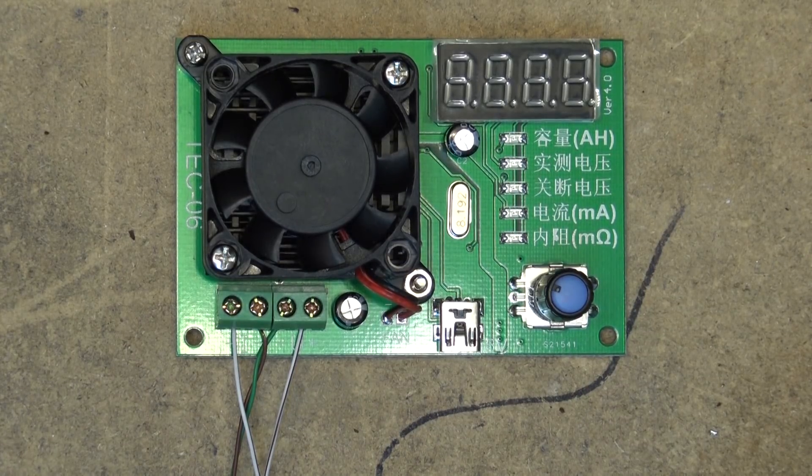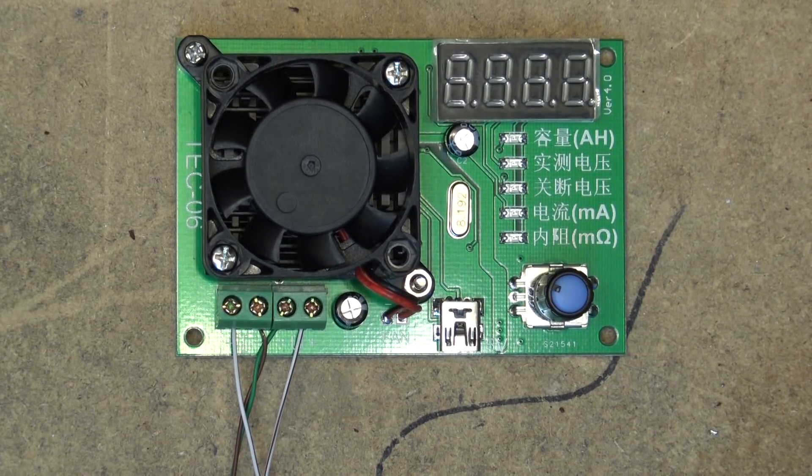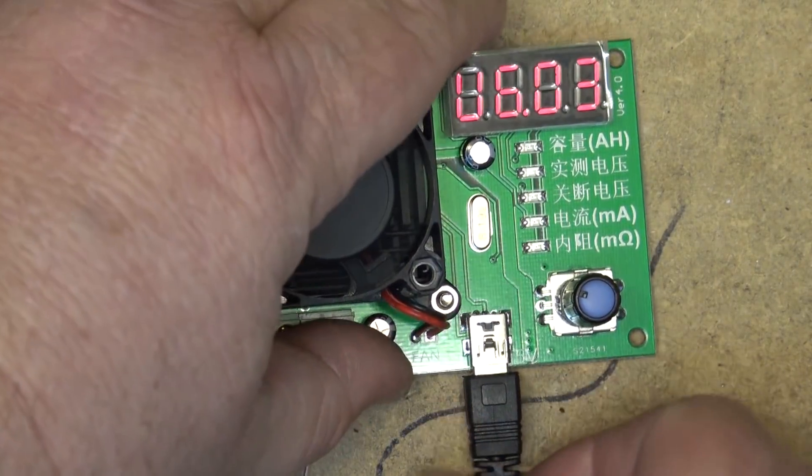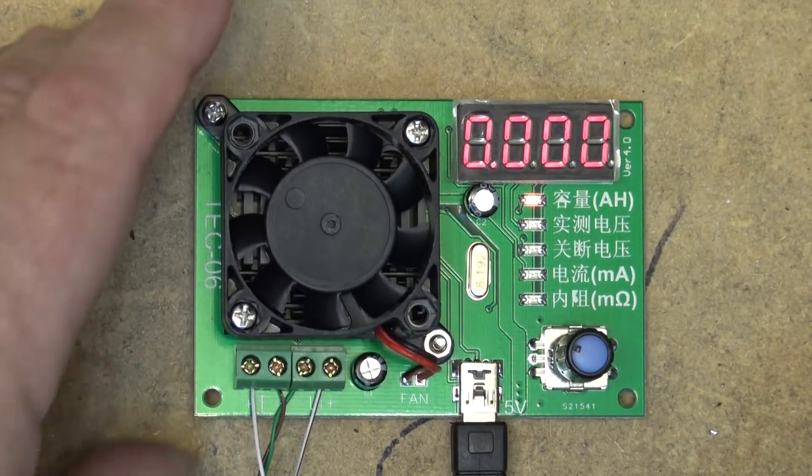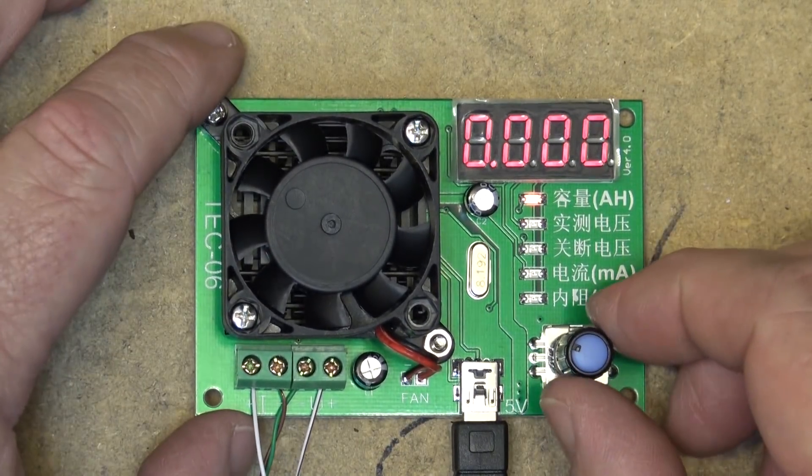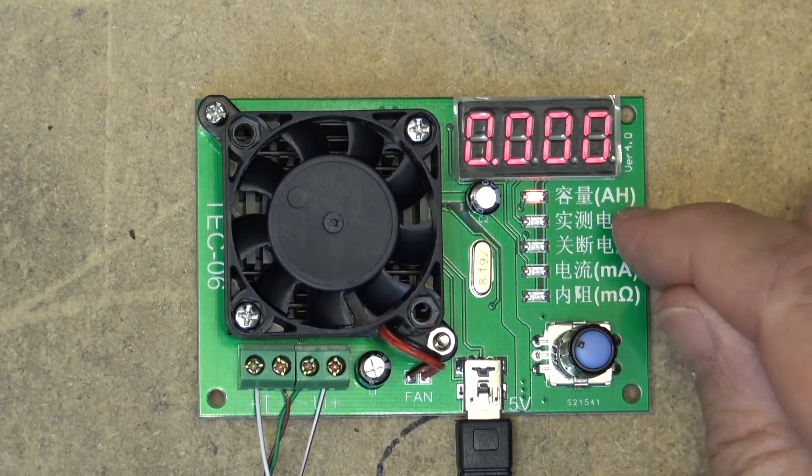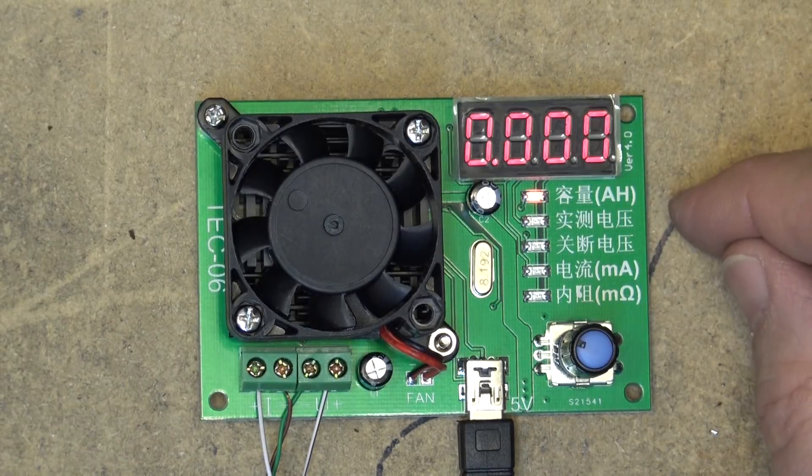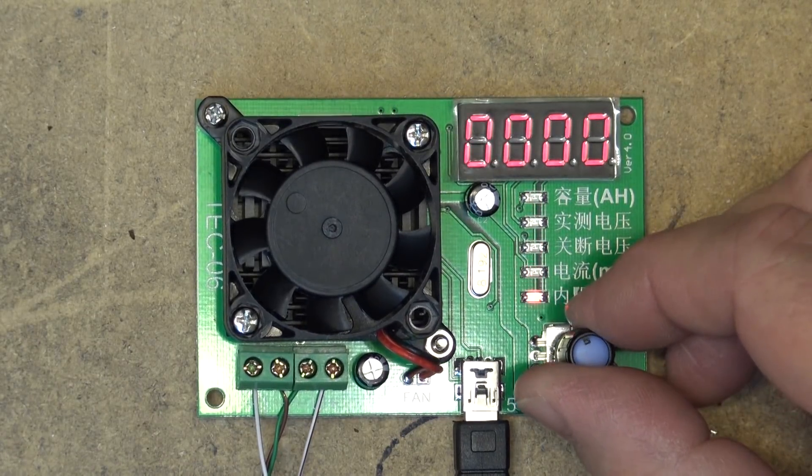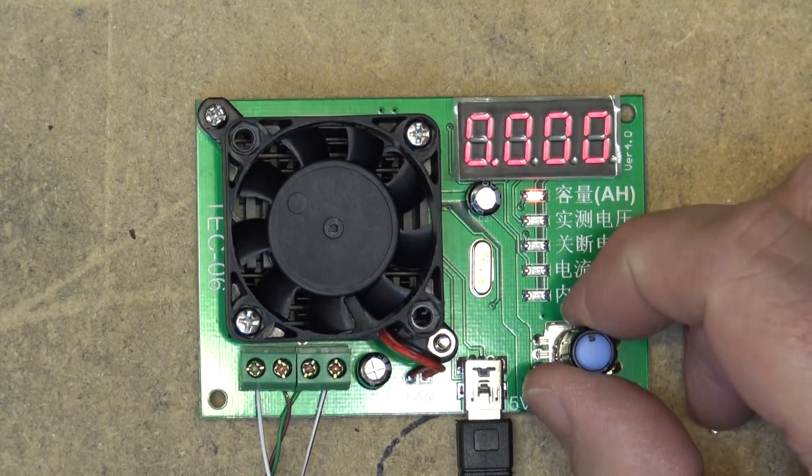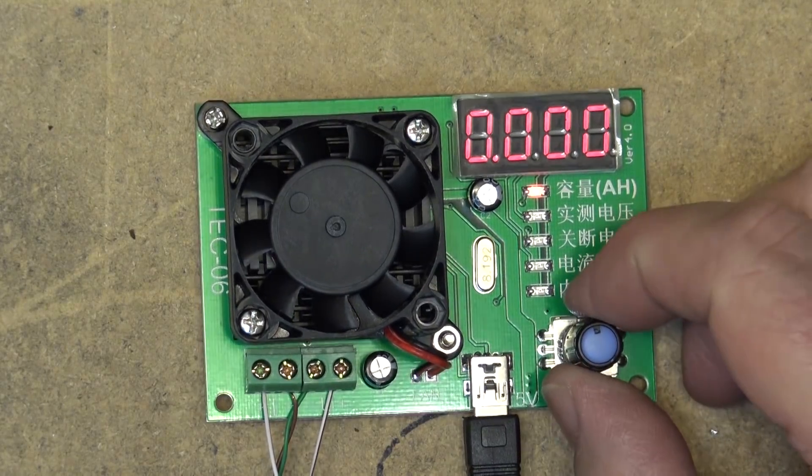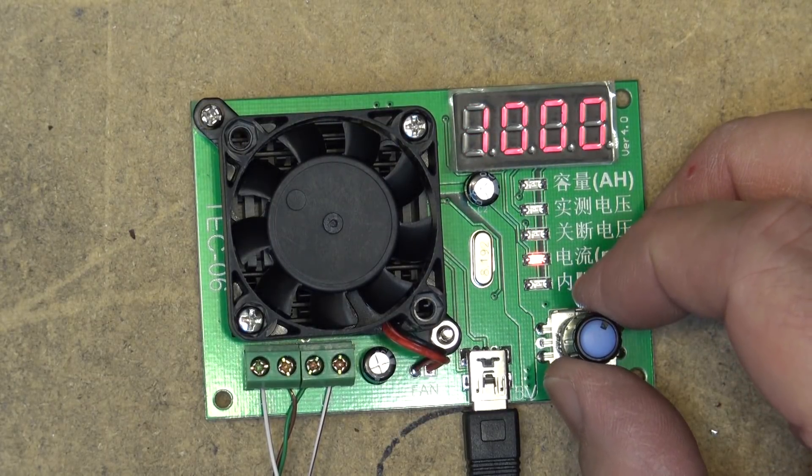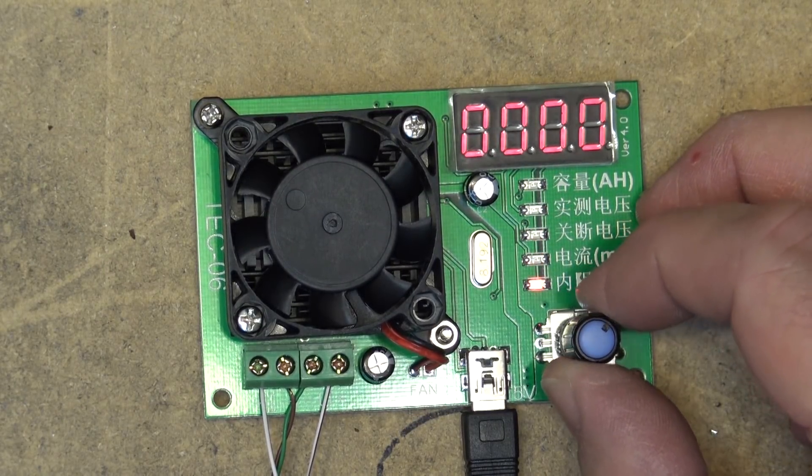Let's power this thing up, get my power cord. You can see we have a digital display and it looks like if we translate to English our five inputs here, our five settings are: your voltage in amp hours, your measured voltage, your shutdown voltage, the current in milliamps, and the internal resistance of the battery.